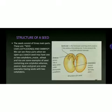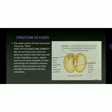A seed may have one or two cotyledons. Maize, wheat, and rice are some examples of seeds containing one cotyledon, whereas peanut, bean, and gram are some examples of seeds with two cotyledons. I hope you understand the structure of seeds.